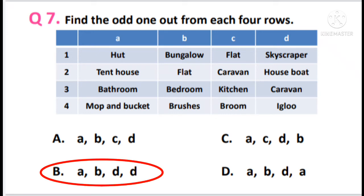The answer is option B — that is A, B, D, D. For the first row, A hut was odd. For the second row, B flat was odd. For the third row, D caravan was odd. And for the fourth row, D igloo was odd. Thus the answer came A, B, D, D.